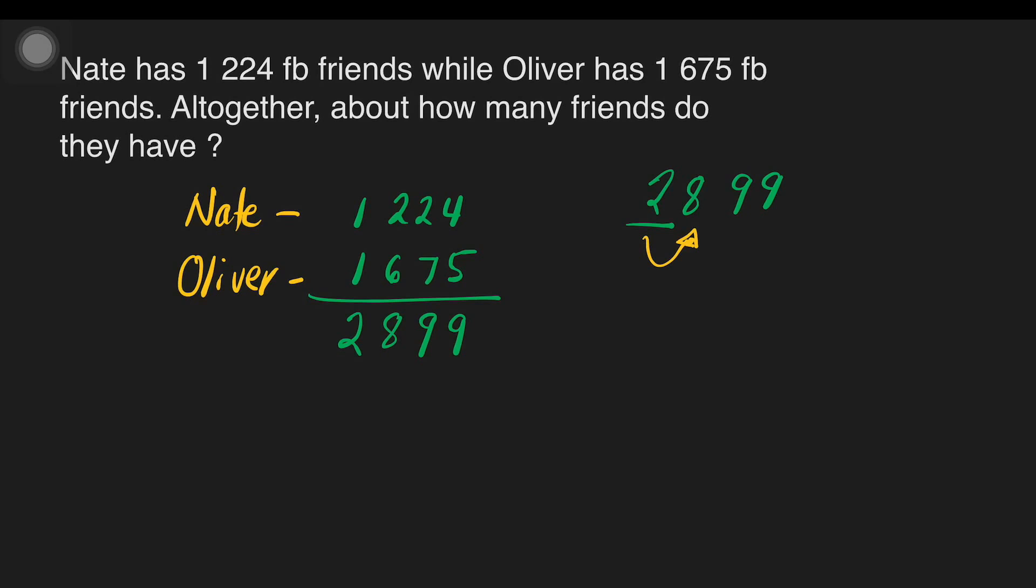It means we will round up. Then, we will add 1 to the rounding place. That is, 2 plus 1 is equal to 3. Then, the rest of the digits will be 0. So, it means our answer is 3,000.